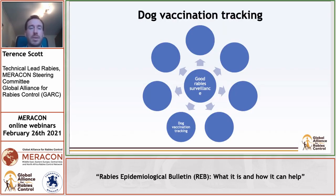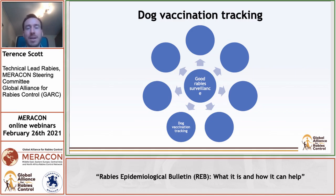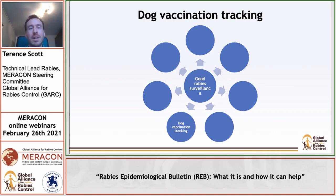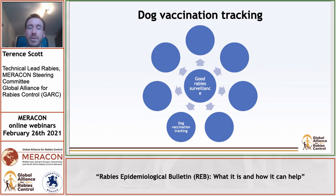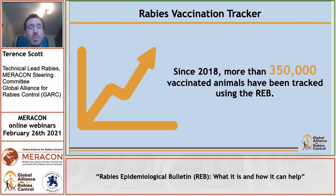The system helps you track your mass dog vaccinations through a specific mobile phone app or the GARC data logger, which allows you to track every single animal that has been vaccinated. This automatically generates maps updated in real-time to show mass vaccination campaign progress, determine vaccination coverage, and identify gaps in vaccination. All maps are interactive — you can click on individual dots to get specific information about each vaccinated animal. Since 2018, more than 350,000 animals have been tracked using this system, proving its effectiveness.